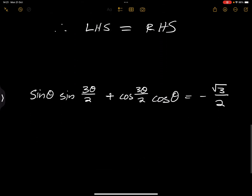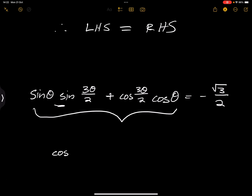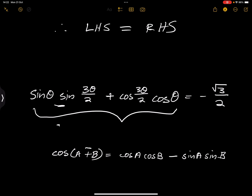If you look at the left-hand side, it seems to be a compound angle formula. Remember that cos(a + b) = cos a · cos b minus sin a · sin b. Here we have sin and sin, and cos and cos, but we can swap them around. Because we have a plus sign, this corresponds to cos(a minus b). So rewriting in the usual form: cos(3θ/2) · cos θ plus sin(3θ/2) · sin θ equals negative root 3 over 2.